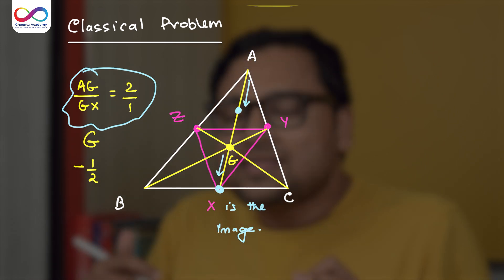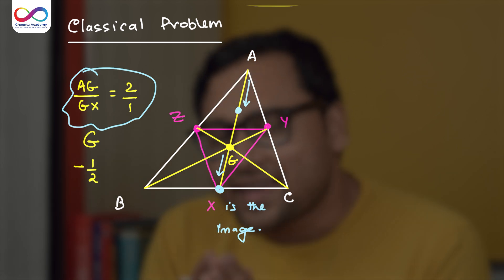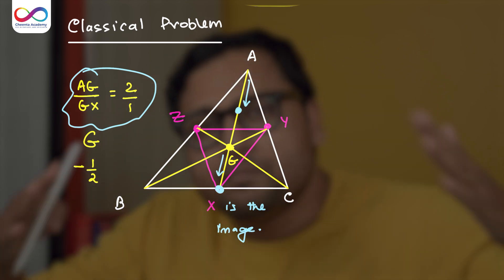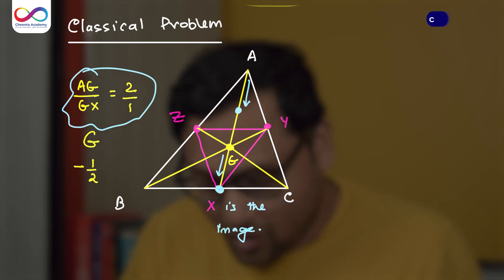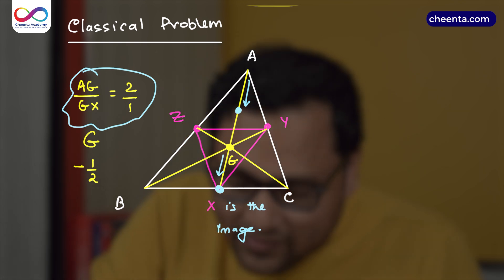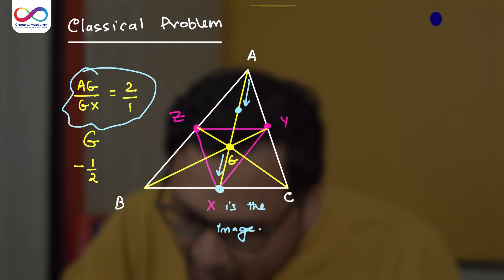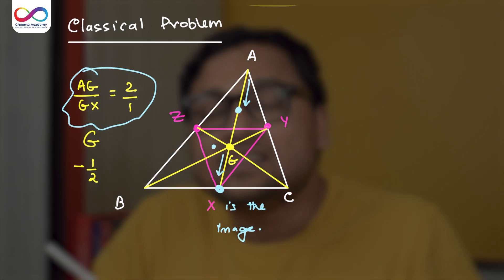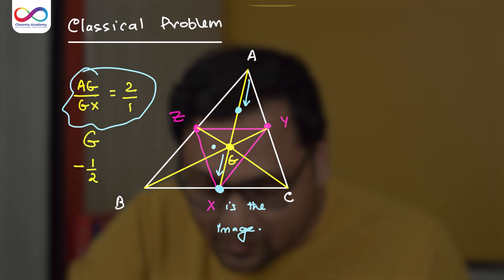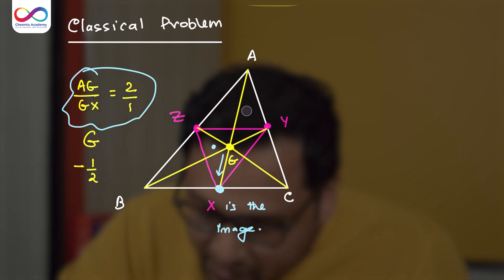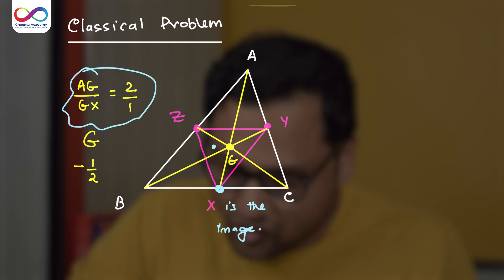I hope this much is clear. So now you can think of the medial triangle as the homothetic image of the main triangle ABC. Now, let's do one thing. Let's quickly draw the circumcenter of the main triangle. I'll erase some of the detail because it will create some confusion.